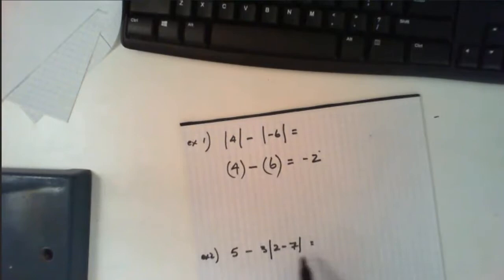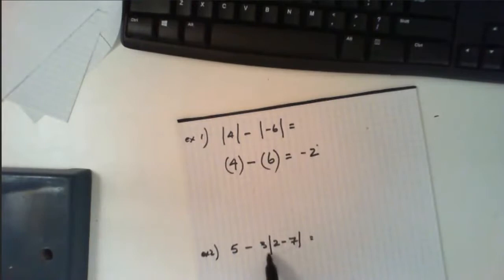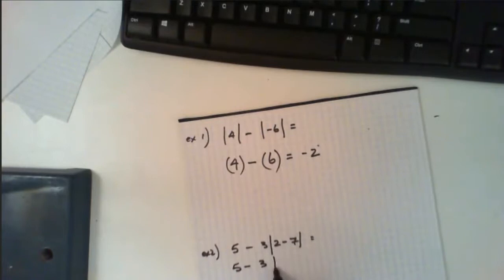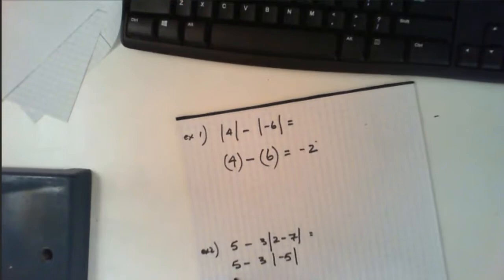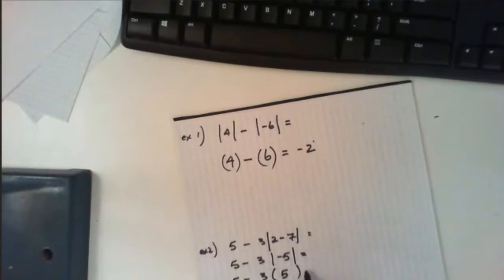In the second example, we have 5 minus 3 times the absolute value of 2 minus 7. First, 2 minus 7 gives the absolute value of negative 5. The absolute value of negative 5 is positive 5. Using the order of operations, this becomes 5 minus 3 times 5, which is 5 minus 15, giving an answer of negative 10.